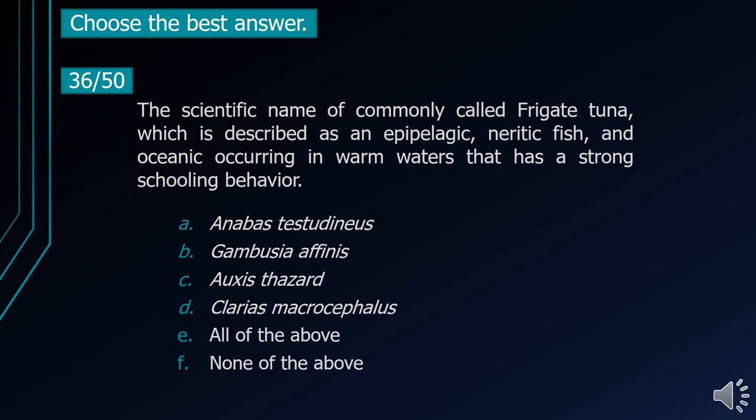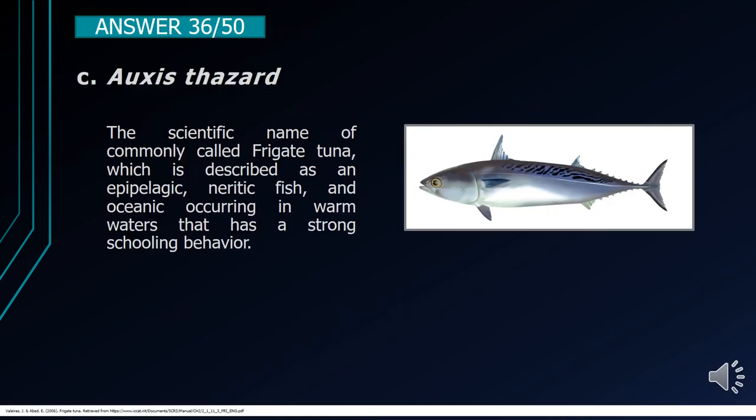Number 36. The scientific name of the commonly called frigate tuna, which is described as an epipelagic, neritic fish — an oceanic species occurring in warm waters with strong schooling behavior. A. Anabas testudineus. B. Gambusia affinis. C. Auxis thazard. D. Clarias macrocephalus. E. All of the above. F. None of the above. The correct answer is letter C, Auxis thazard. It is the scientific name of the commonly called frigate tuna, described as an epipelagic, neritic, oceanic fish occurring in warm waters with strong schooling behavior.